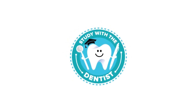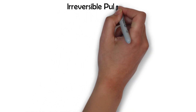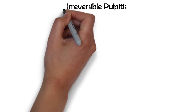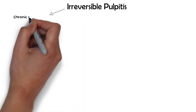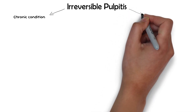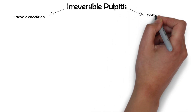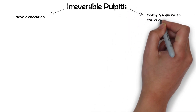Hello and welcome back everyone. Unlike reversible pulpitis which is mostly an acute condition, irreversible pulpitis is more of a chronic condition and is mostly a sequel to, or a progression from, a tooth that was suffering from reversible pulpitis.